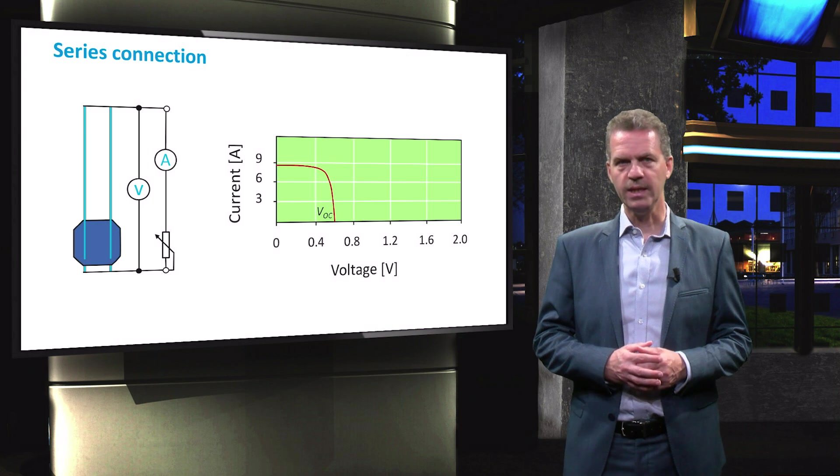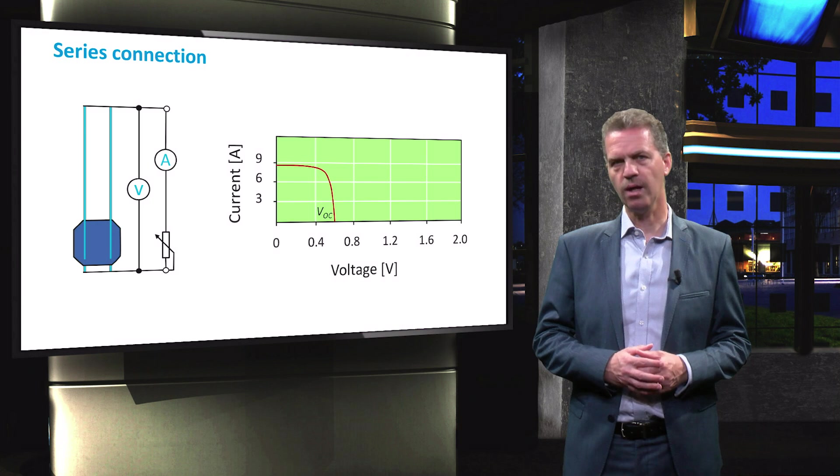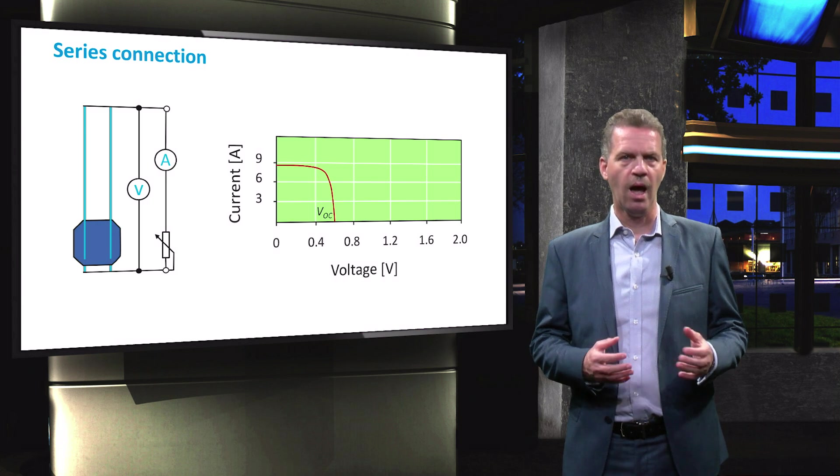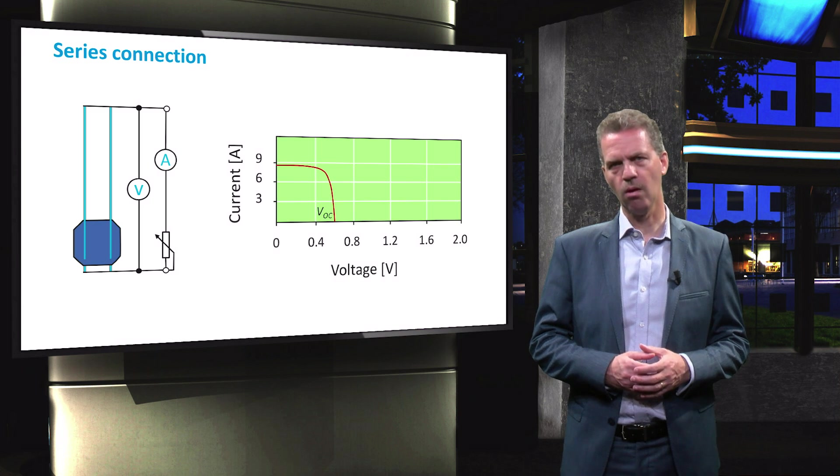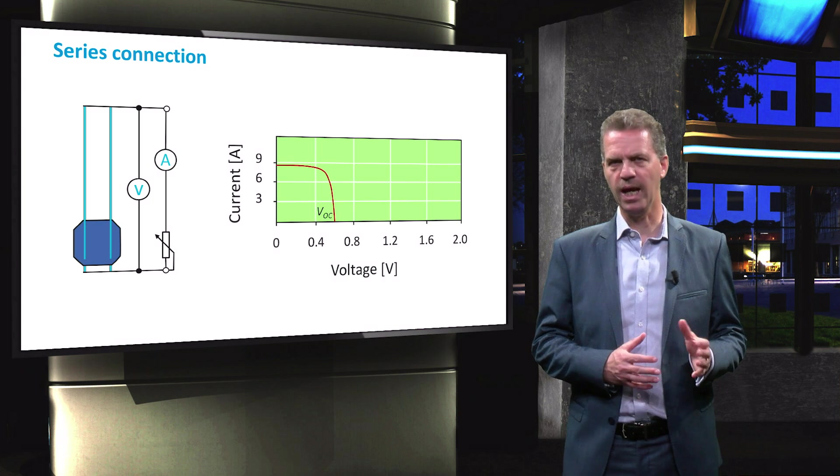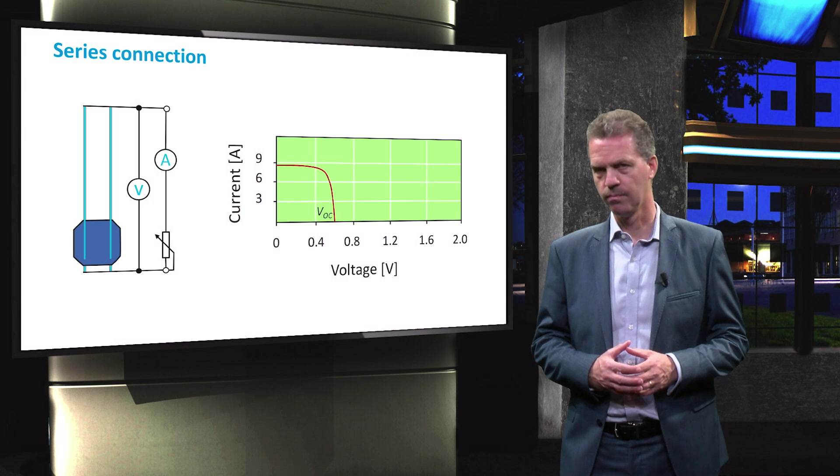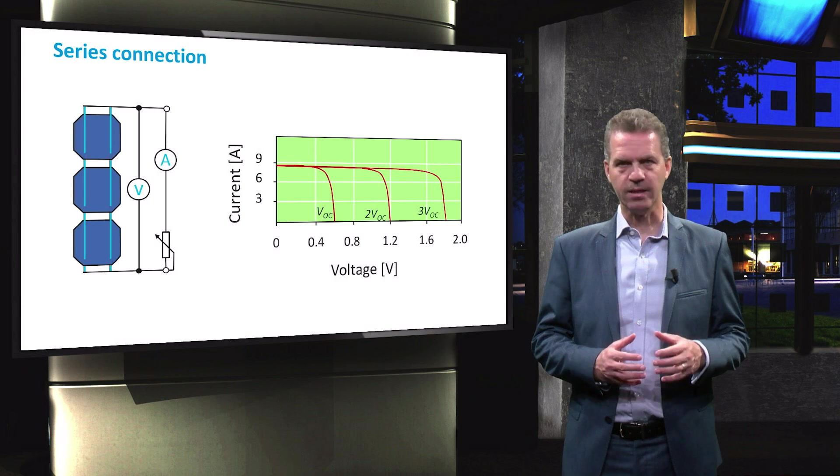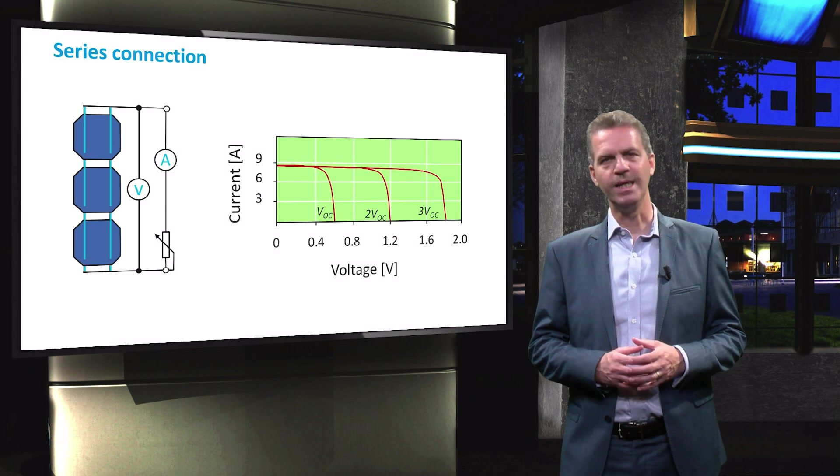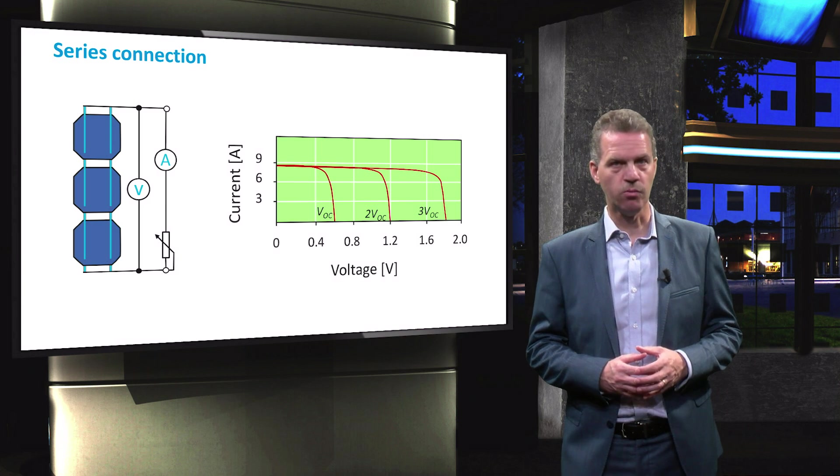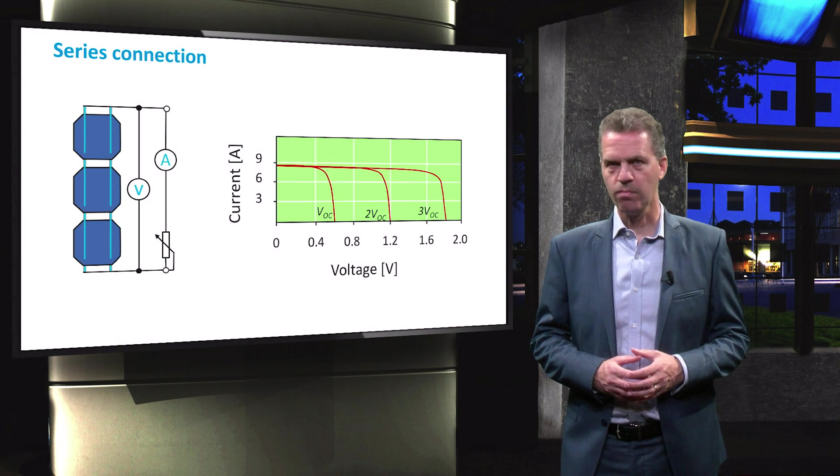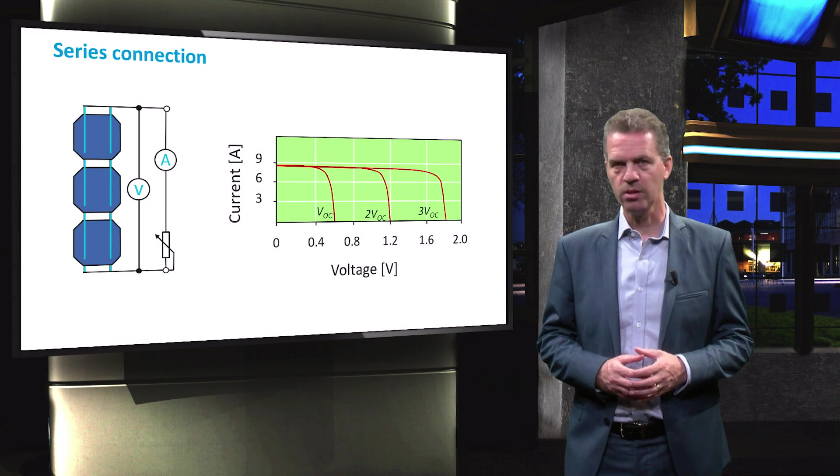The current produced by each cell is determined by the photocurrent and thus the light intensity incident on each cell. At one sun illumination, the short-circuit current of a single cell is between 8 and 9 amperes. In a series connection, the voltage of the cells is added, while the current flow through each cell is equal, similar to a series connection of batteries. This current is controlled by the cell that produces the lowest photocurrent.